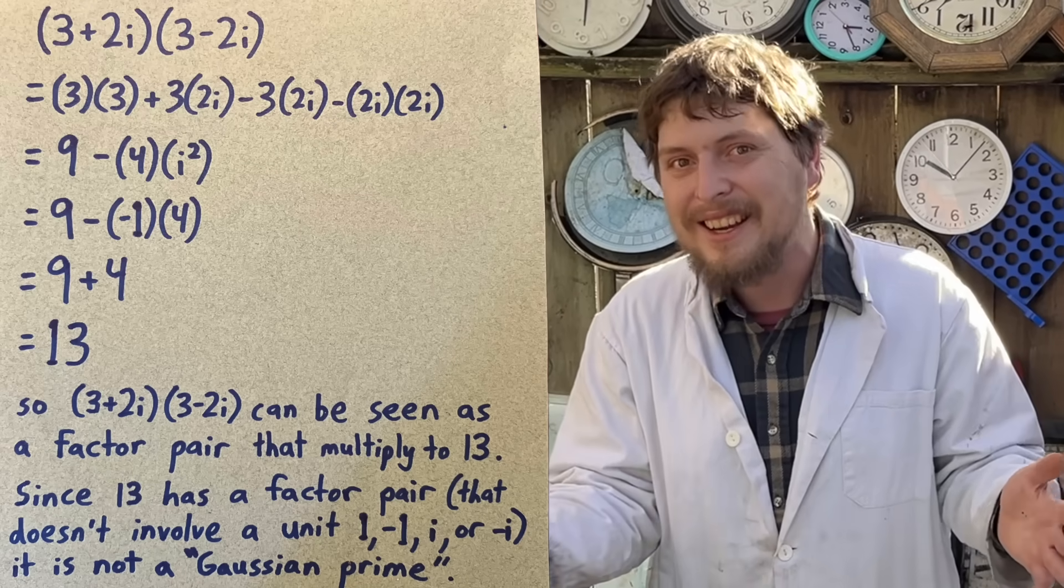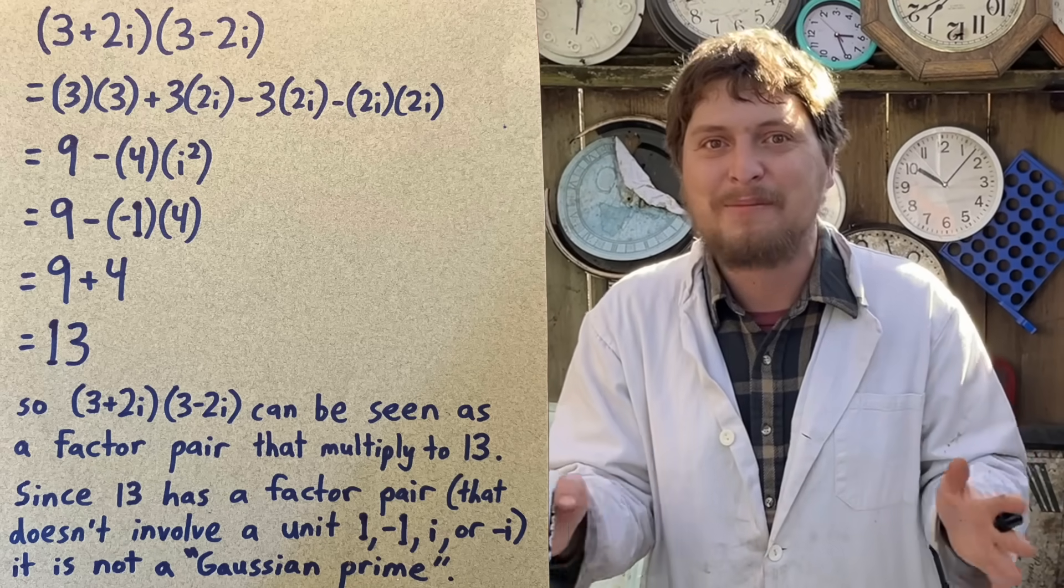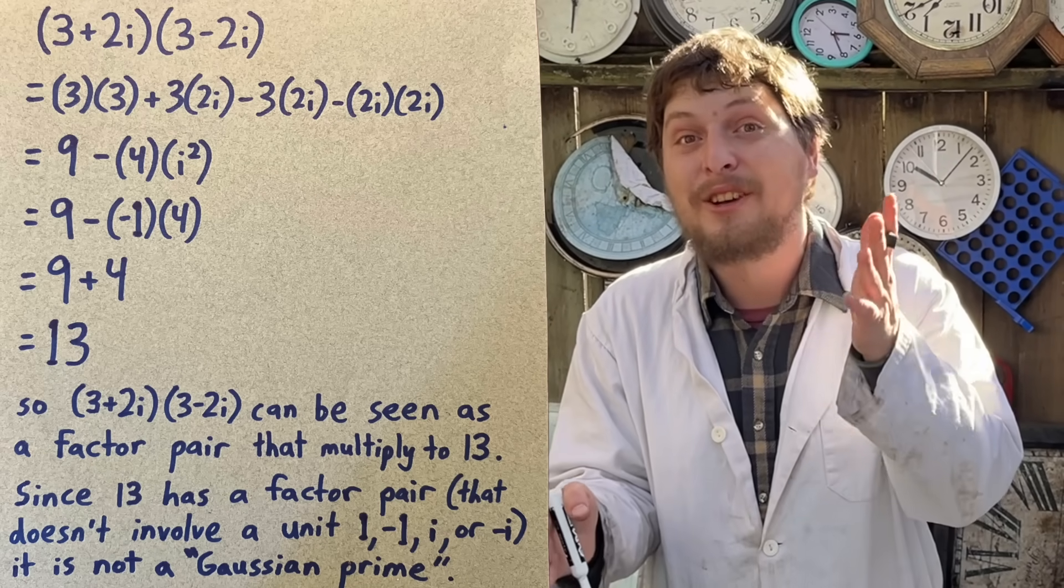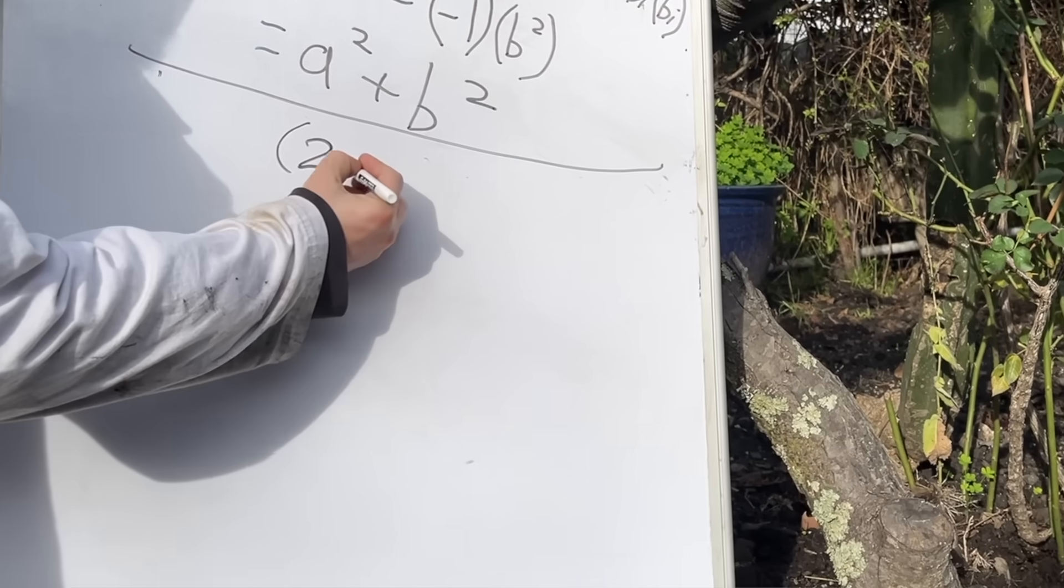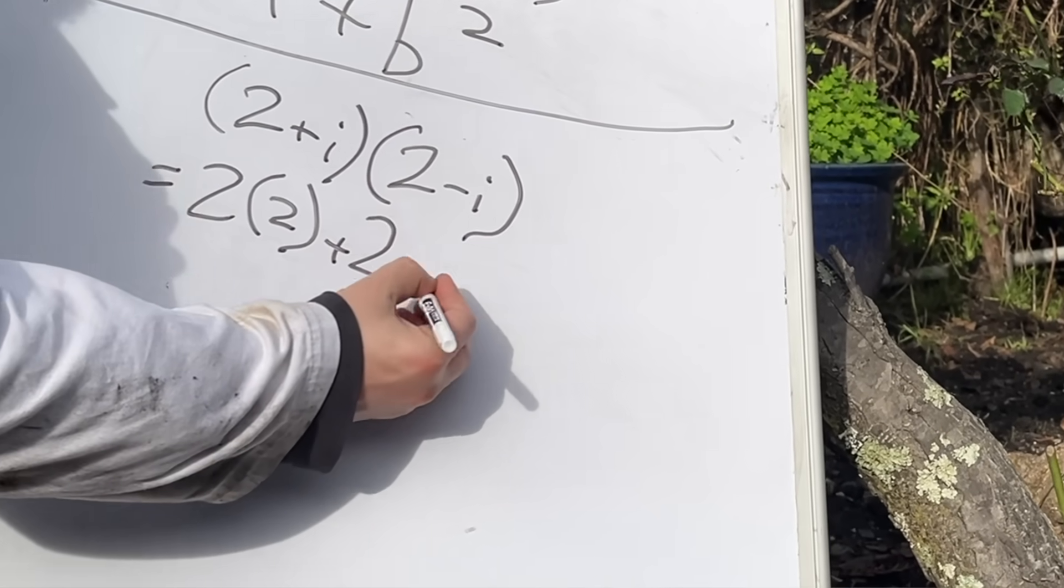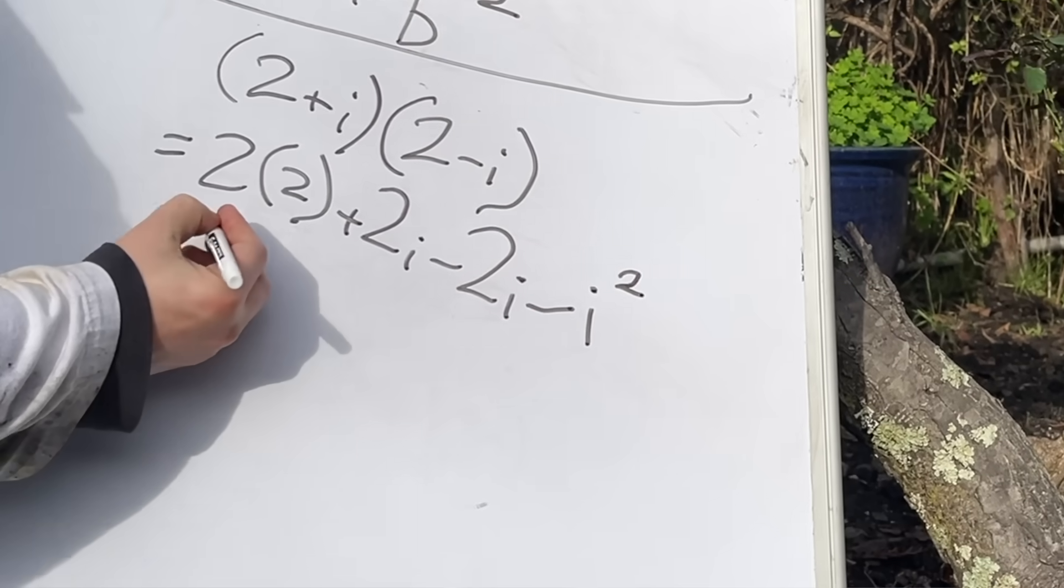And 13 is not a Gaussian prime, because it could be factored in this way. And similarly, if I do 2 plus i times 2 minus i,